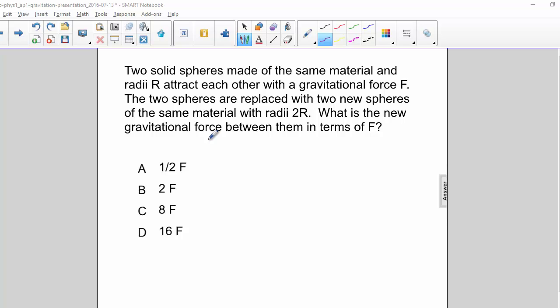What is the new gravitational force between them in terms of F? F is equal to G rho 4 thirds pi R cubed rho 4 thirds pi R cubed divided by R plus R squared.